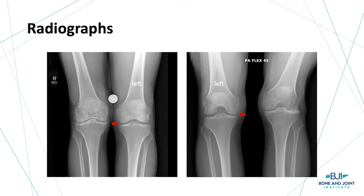You can see what we call the AP and the PA flex view. He actually has severe arthritis of his other knee — the right knee — but he has no pain there. So we're going in with the knee scope to hopefully cure his mechanical symptoms from his meniscus.